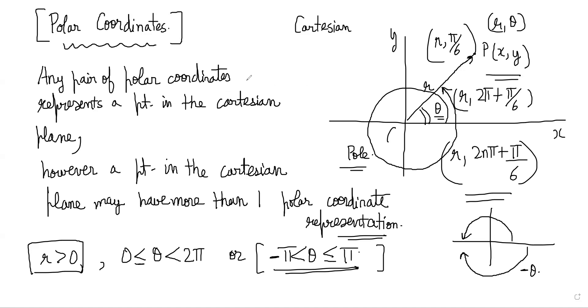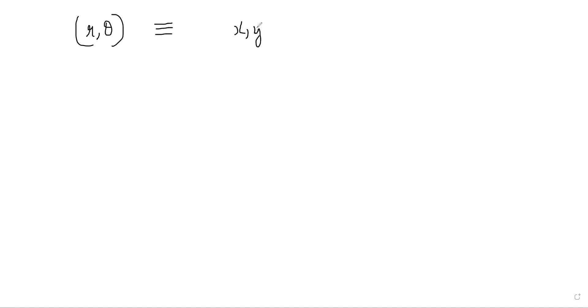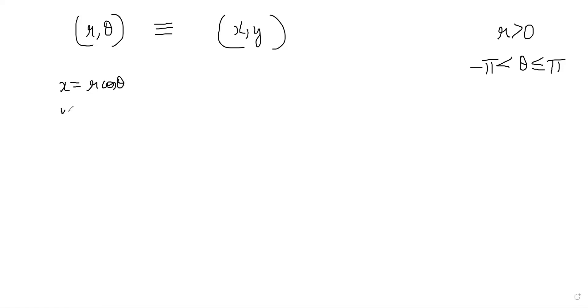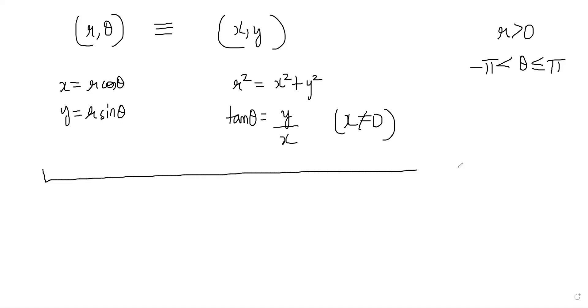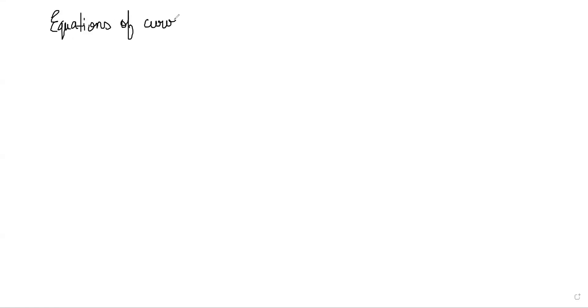This is our basic understanding of polar coordinates. Under the conditions r > 0 and minus pi < theta ≤ pi, there is a one-to-one correspondence between (r, theta) and (x, y). We have: x = r cos theta, y = r sin theta, and conversely r² = x² + y², tan theta = y/x where x ≠ 0. Using these, we can represent different curves in polar coordinate form.